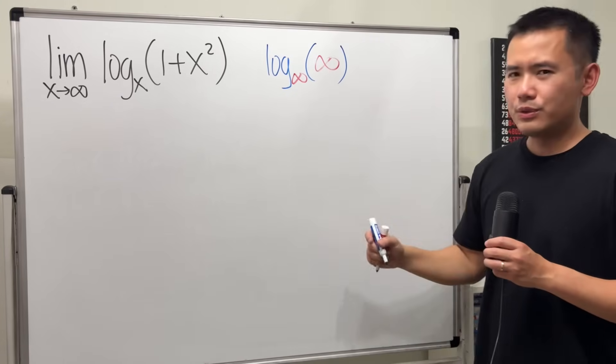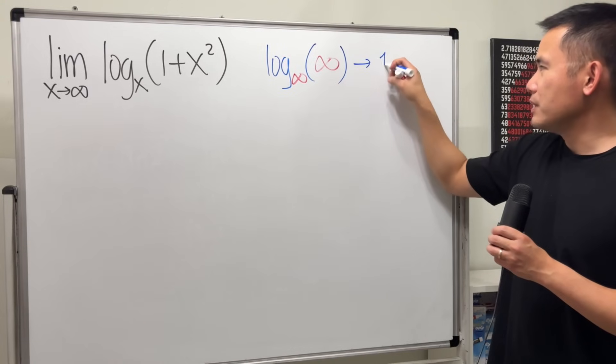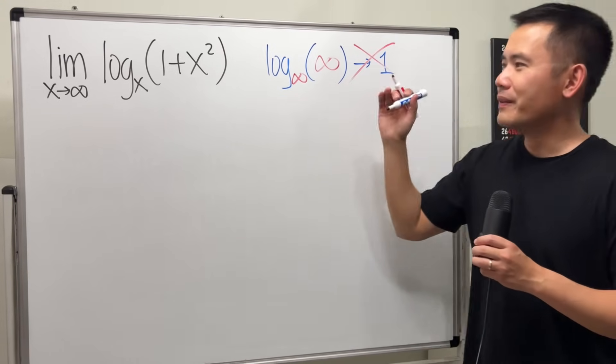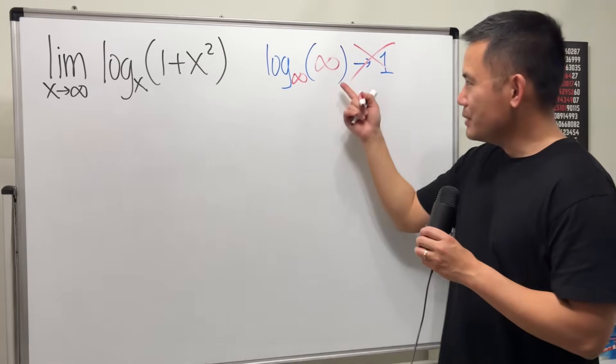Well, we know infinity to the first power is equal to 1, so this should just be approaching 1, right? No, in fact, this is an indeterminate form that we don't know what it is. Isn't that really cool?